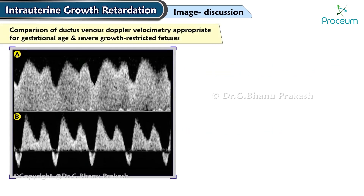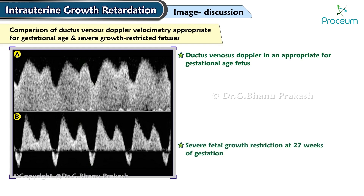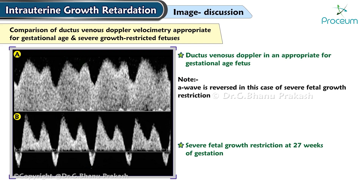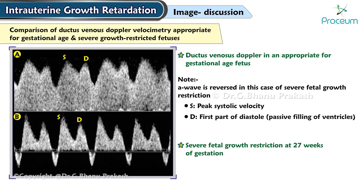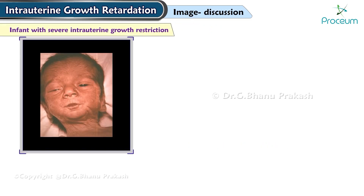A comparison of ductus venosus Doppler velocimetry shows panel A for an appropriate-for-gestational-age fetus and panel B for severe fetal growth restriction at 27 weeks of gestation, where the A wave is reversed. In this context, S stands for peak systolic velocity, D for the first part of diastole (passive filling of the ventricles), and alpha for the second part of diastole representing atrial contraction. An image of an infant with severe intrauterine growth restriction displays a typical shrunken or wizened appearance.